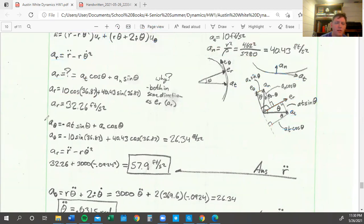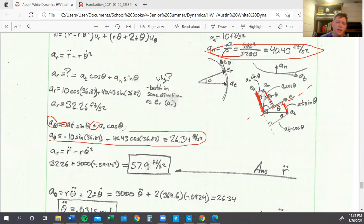Then we need A theta, which is basically the same thing as before. We're just taking the values that are now in this direction. Because they are on either sides of our origin, we actually have to subtract this AN cosine theta. That's going to be our positive value, and AT sine theta is our negative value. We just plug in our AT that was given in the problem of 10 and our AN which we found. We get that A theta equals 26.34.